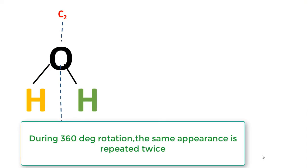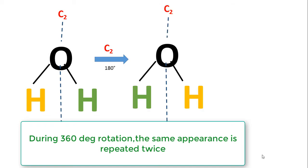Now let us look at the C2 axis present in the water molecule from a different diagram. In this diagram the two hydrogens are labeled in different colors — one in yellow and another in green. Both are identical, but just to distinguish between them we have used different coloration. When it is rotated through 180 degrees about the C2 axis, we get an appearance in which the atoms are interchanged but the appearance is equivalent.